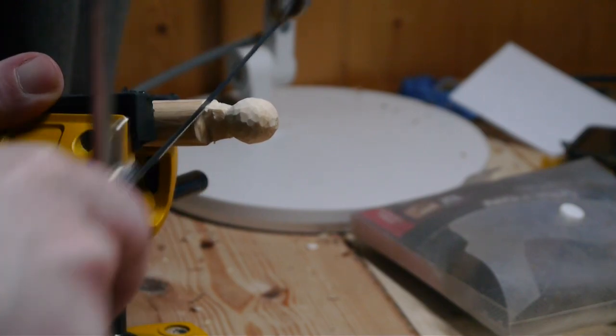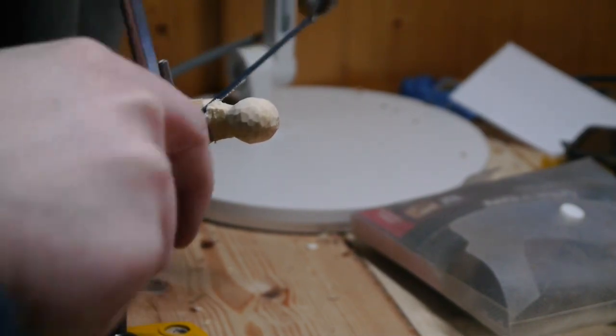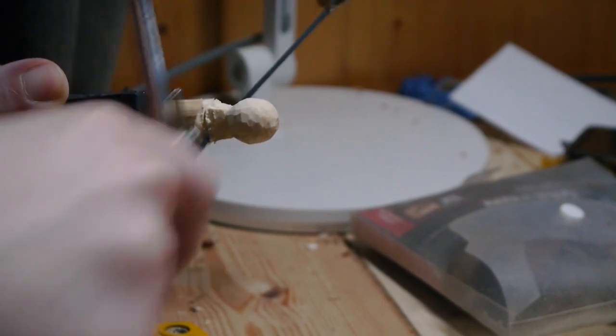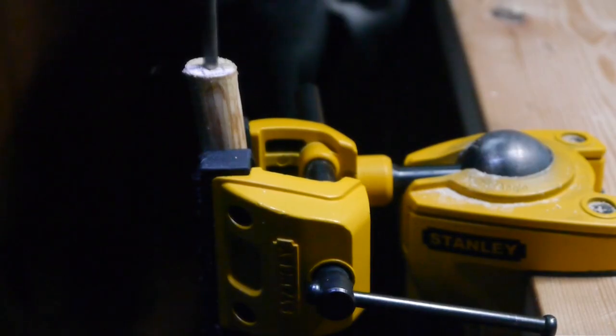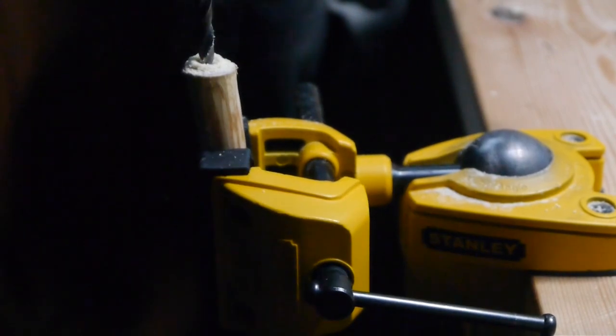Once I'd carved the head of the third robot, I cut it off with a coping saw. I had to make sure to leave enough material under the head for the little legs to connect onto it. Then it's time to make a kind of scope for the front of the head.